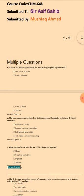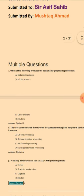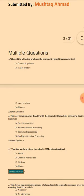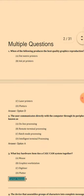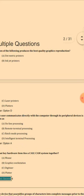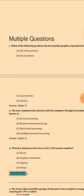Question 1: Which of the following produces the best quality graphic reproduction? The answer is option D: Plotters. Question 2: The user communicates directly with the computer through its peripheral devices — this is known as option A: Online processing.